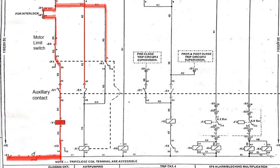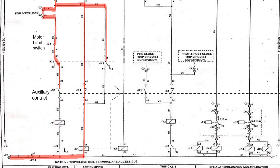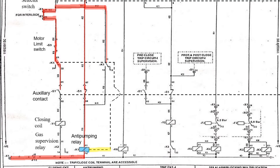As soon as the circuit breaker closes, the auxiliary contacts S1 operate and change their position — that is, all NO turns to NC and NC to NO. So the current to the closing coil gets cut and it gets de-energized. Simultaneously, K1 anti-pumping relay is energized and the contacts of the anti-pumping relay change their position — NO contact becomes NC and NC contact turns to NO — forming a closed circuit on the right-hand side and freewheeling the current after the close operation.